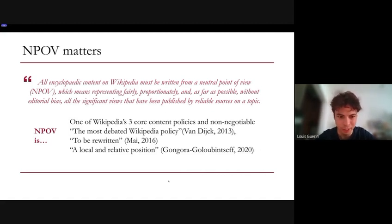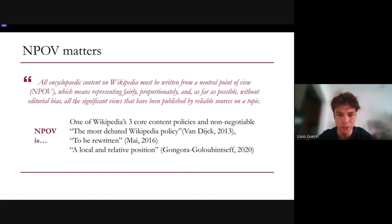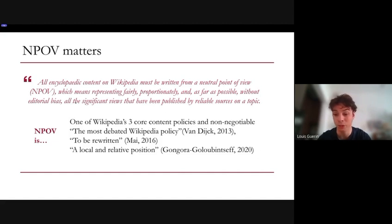To do this work we had to start with NPOV, one of Wikipedia's core content policies that requires that all significant views published by reliable sources are represented fairly, proportionately, and as far as possible without editorial bias. While this policy is praised for its intent and is one of Wikipedia's three core non-negotiable content policies, it's also been seen as mostly aspirational by a variety of researchers due to the challenges of maintaining true neutrality. A few quotes from different research studies point out that neutrality is often seen as a very local position, a policy that might have to be rewritten, and is actually the most debated Wikipedia policy.